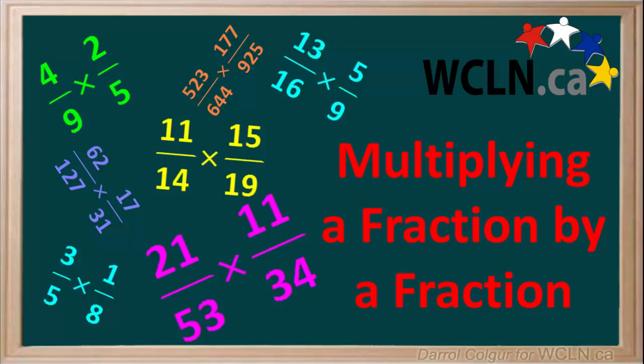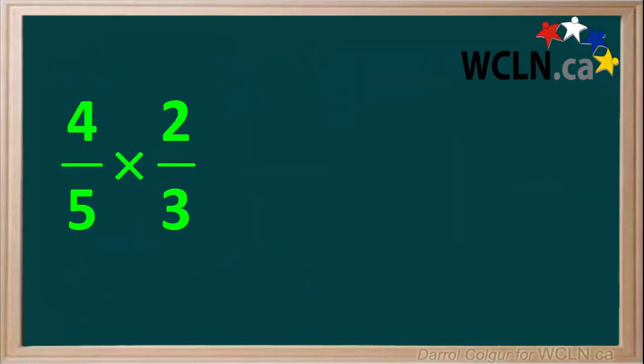Sometimes we have a fraction and we need to multiply it by another fraction. Let's see how this is done. Here's an example. Let's say we're asked to multiply the fraction 4 fifths by the fraction 2 thirds.